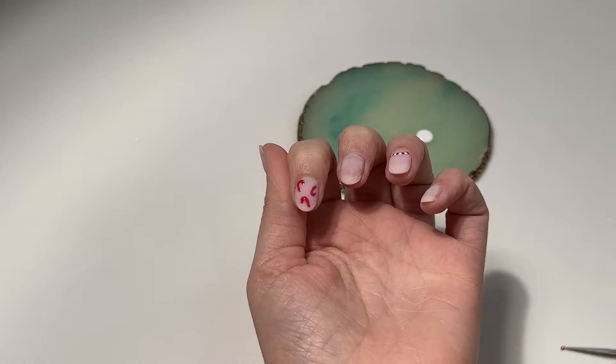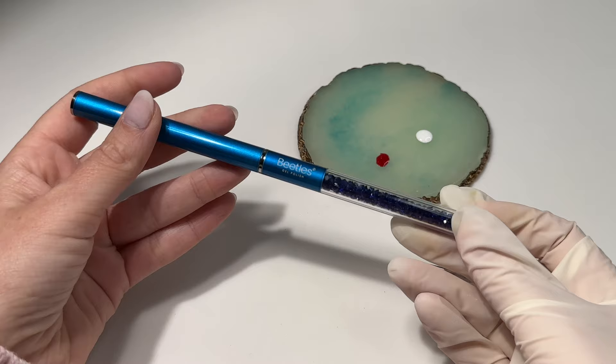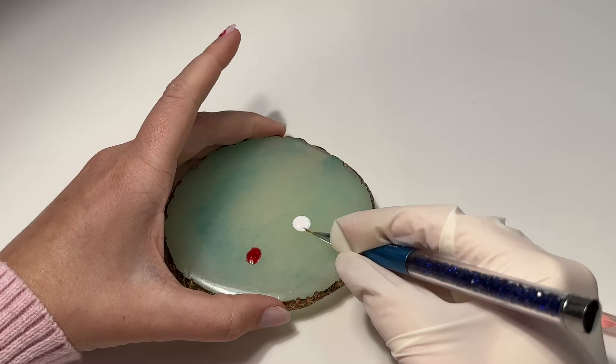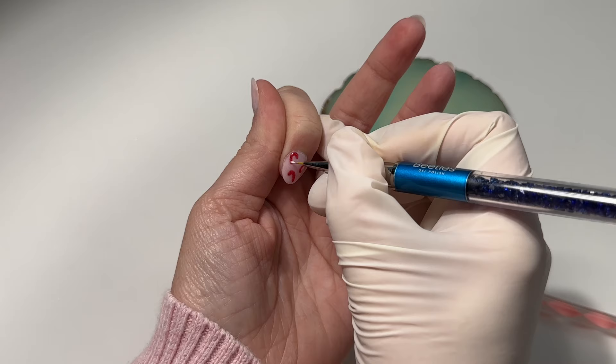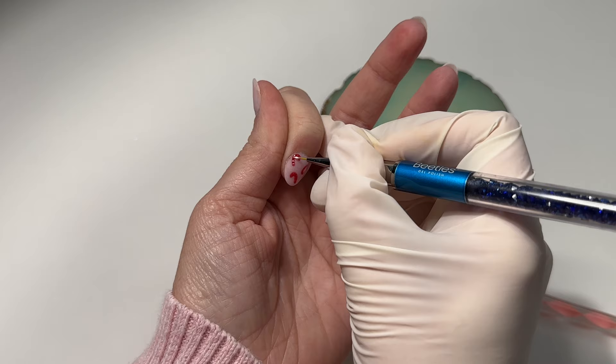I'm all done with my candy cane so I am going to cure for 60 seconds. With my Beetles brush - any brush will do - we're just going to do little swipes on the candy canes to create those stripes and then I'm going to add some dots in between with my dotting tool.